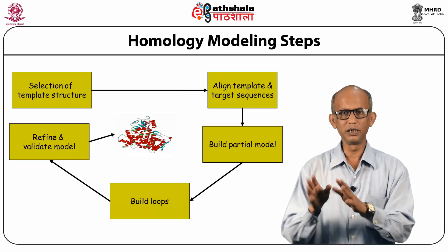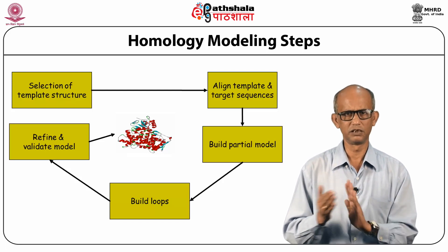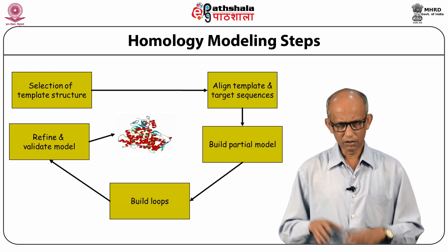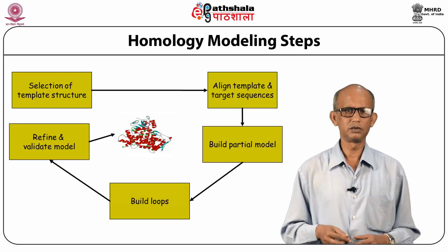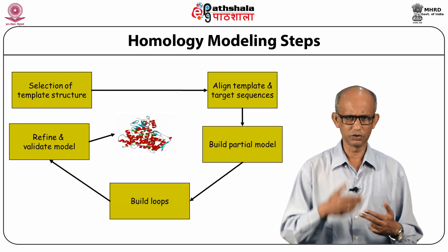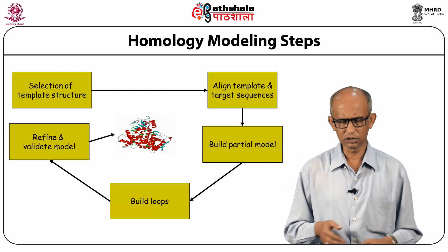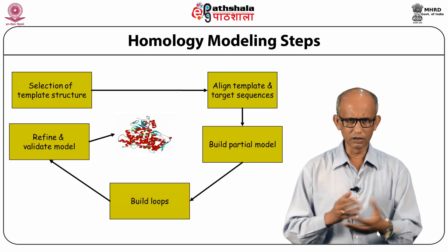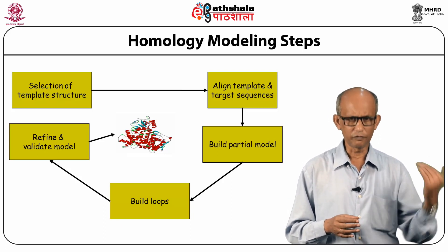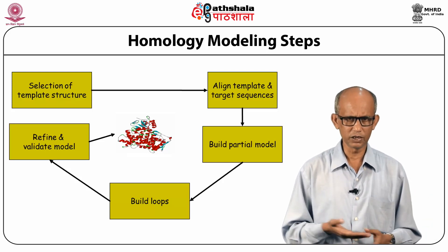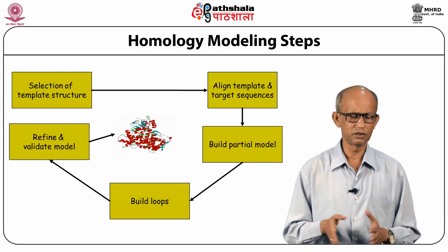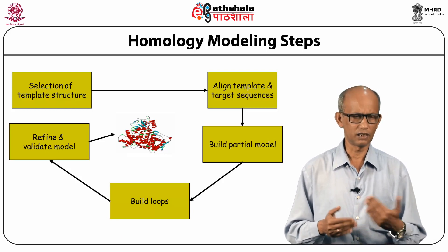Using that template, you build a partial model where you identify the secondary structures and ignore the loops at this stage. Taking this partial model, you then try to build in the loops — here your sequence identity might be poor. Once you have built in the loops, you have a preliminary structure which you might like to refine further using force field-based methods. Finally, you have to validate your model to see whether what you have done is likely correct.